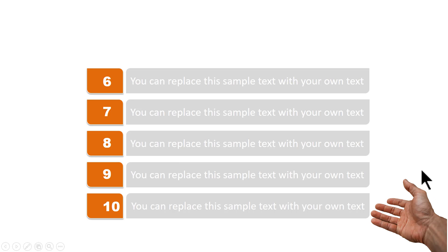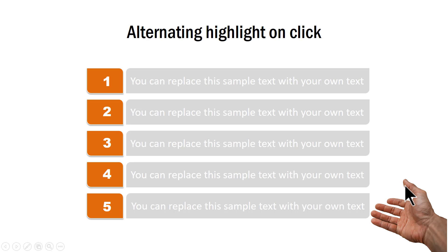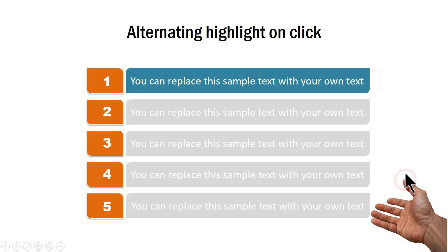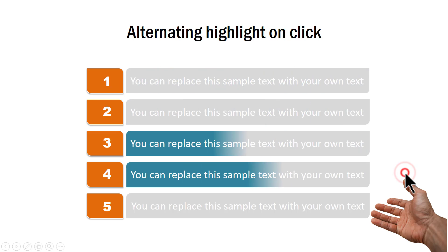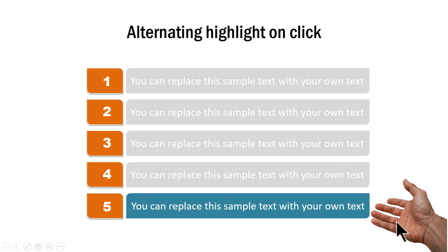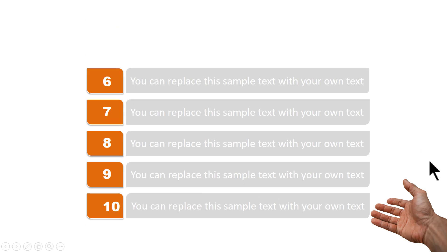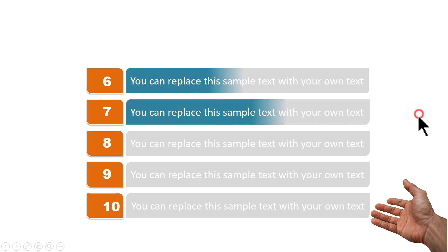Now let me show you a beautiful trick using the power of dynamic transition that can change the game. Here is the alternative. I present the first point, second, third, fourth and fifth. Now observe what happens when I click to reveal the next slide — watch what happens to this hand.